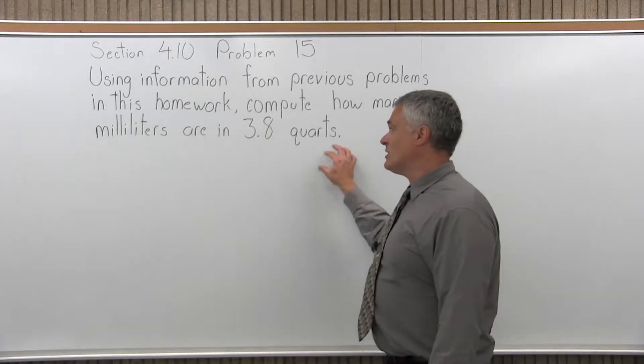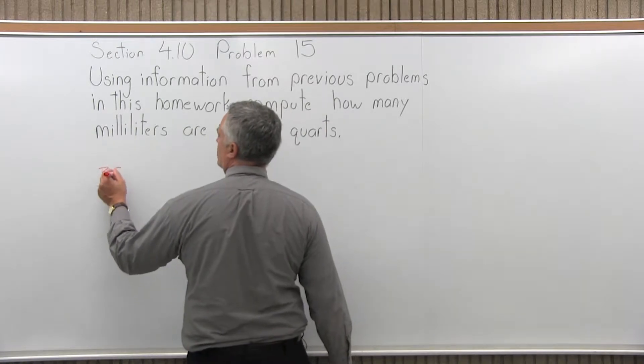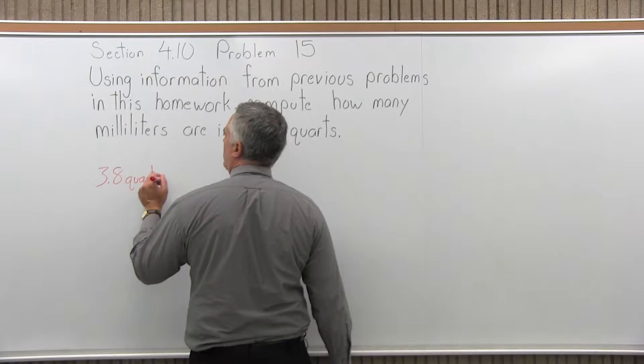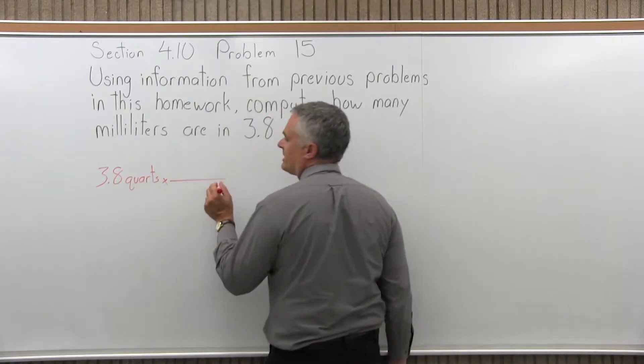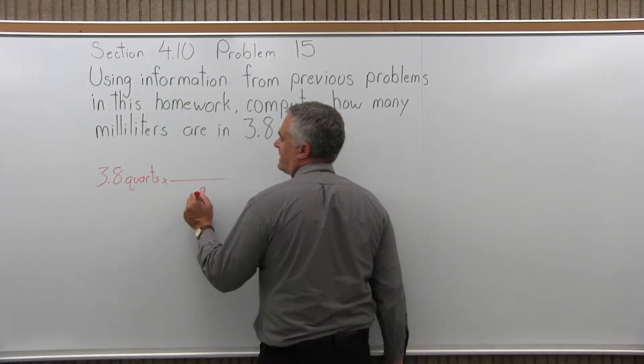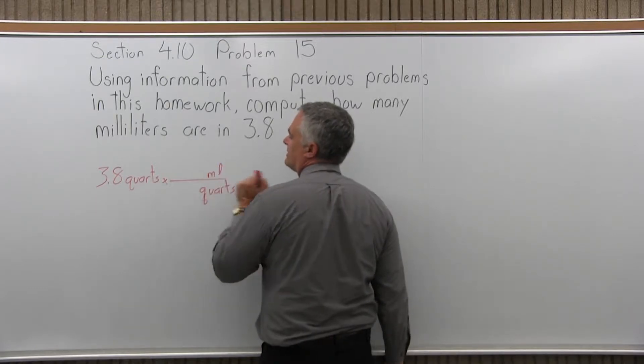So I want to convert quarts to milliliters. Typically what we do is start with a given amount and multiply that times something that will make the units cancel and make what I want show up. So I want to cancel the quarts and what I want to show up is the milliliters.